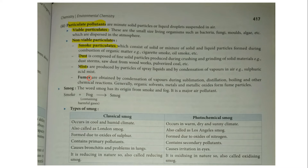Other particulate forms include mist and fume. Smog can be seen from fog. There are two types of smog: classical smog, which occurs in cool and humid climates, and photochemical smog.